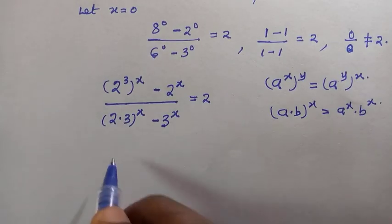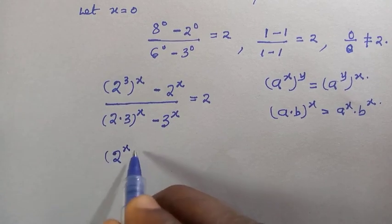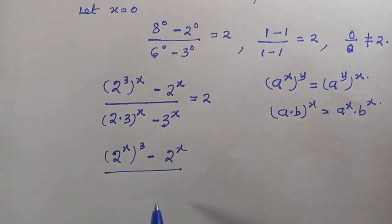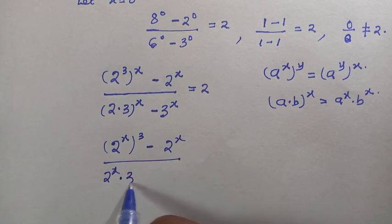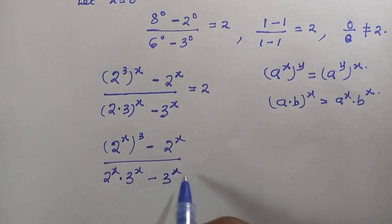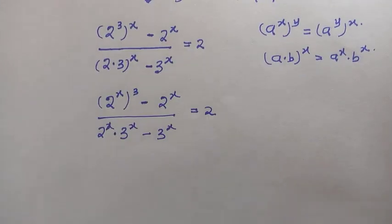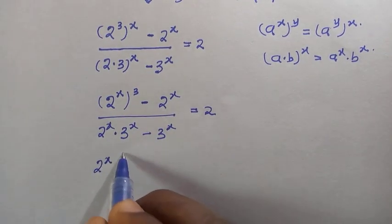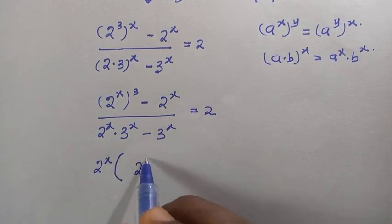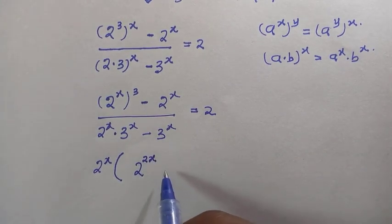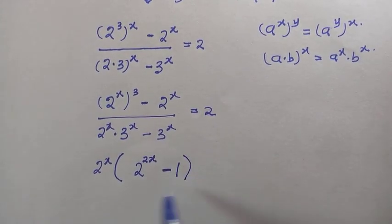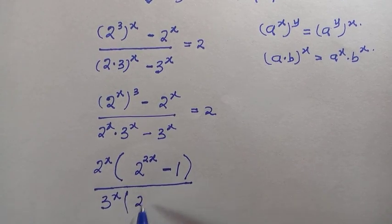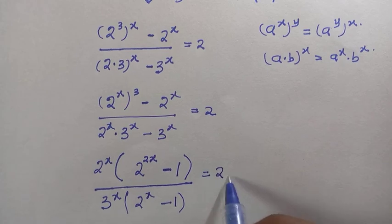By applying this rule, the numerator becomes 2 to the power of x, all raised to the power of 3, minus 2 to the power of x, divided by 2 to the power of x times 3 to the power of x, minus 3 to the power of x, everything equals 2. Something common in the numerator is 2 to the power of x, so factorizing gives 2 raised to power 2x minus 1, all divided by 3 to the power of x times the bracket 2 to the power of x minus 1, everything equals 2.